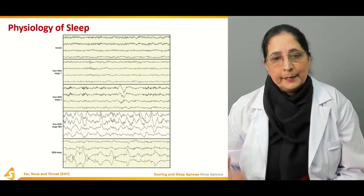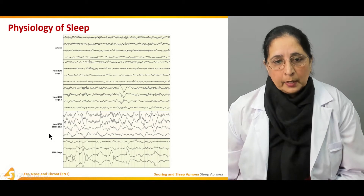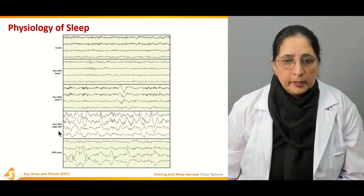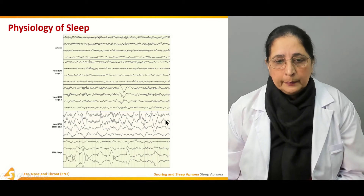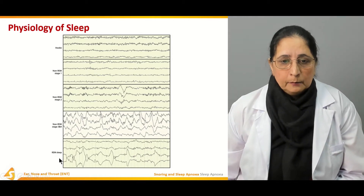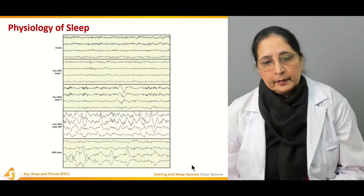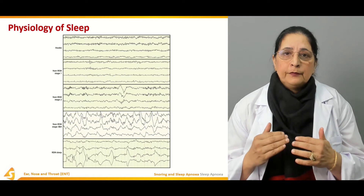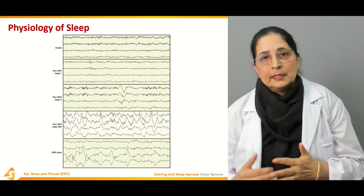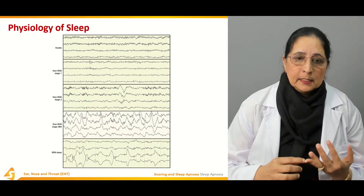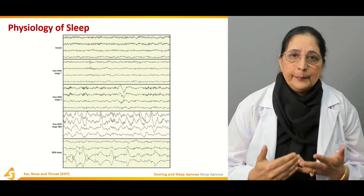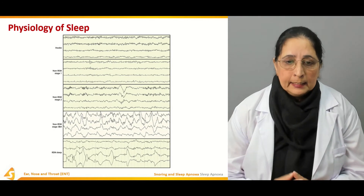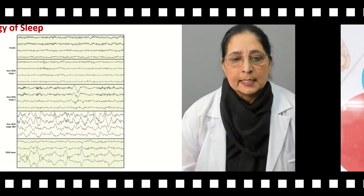The breathing is becoming deeper, not shallow. We have stage three and four — more deep — and then rapid eye movement sleep. So these are the stages of normal sleep physiology: when the person is awake, then non-rapid eye movement stages one, two, three, and four, and then rapid eye movement sleep.